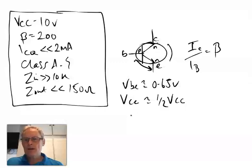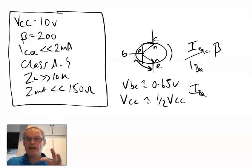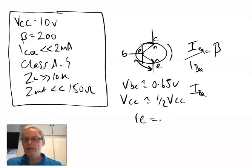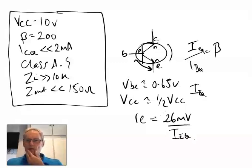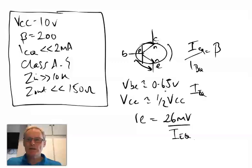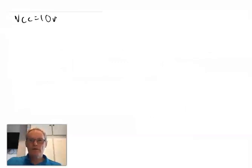The input impedance is determined by the quiescent emitter current IEQ — that's ICQ and IBQ at the quiescent point — the DC characteristic when no audio is being input. The intrinsic emitter resistance, little re, is equal to 26 millivolts divided by IEQ. As long as you have these key values in mind, it's a good starting point for design.